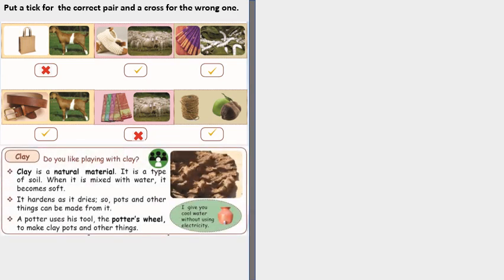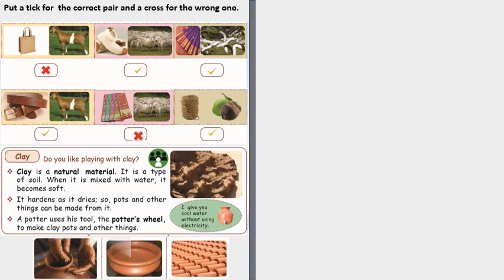Now we are going to talk about clay. Clay is a natural material. It is a type of soil and when it is mixed with water it becomes soft. But it hardens as it dries. So pots and other things can be made from it. A potter uses his tool, the potter's wheel, to make clay pots and other things.